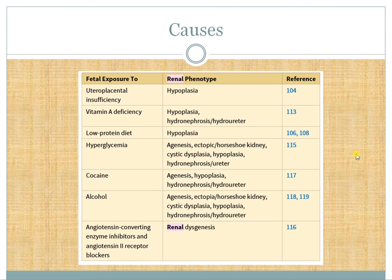Some factors related to these congenital anomalies in various studies include uteroplacental insufficiency, vitamin A deficiency, and low protein diet — all leading to hypoplastic kidneys. There is also oligonephropathy of prematurity, which I will cover in a separate video. This is clinically important in adult patients, as some present in their third or fourth decade of life with chronic kidney disease due to having fewer nephrons at birth.